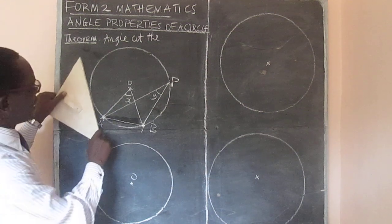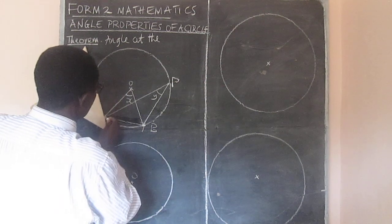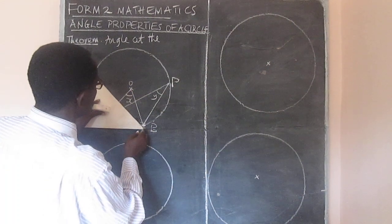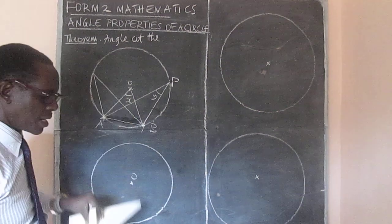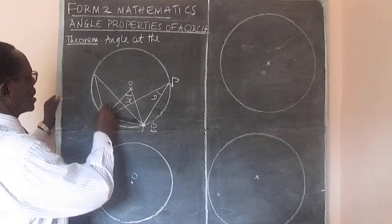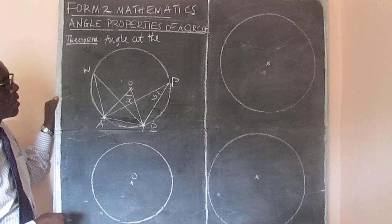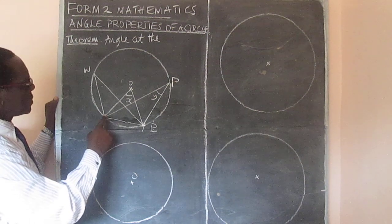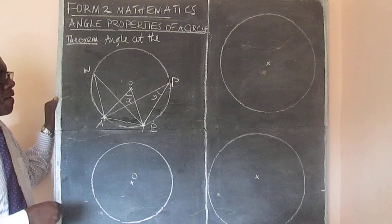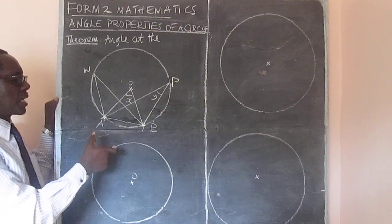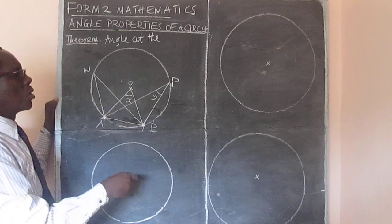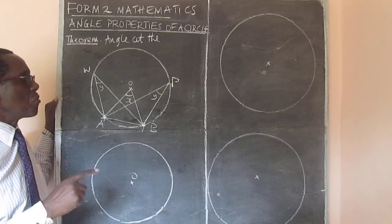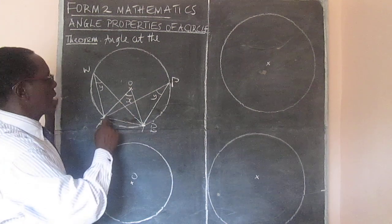We can make the same chord subtend another angle on the circumference, so that whatever we find, we can confirm. We can call this one AWB. So we have angle AOB, angle APB, and angle AWB. Last time we found that angles subtended by the same chord on the same part of the circumference are equal. So we already know that this angle is Y from our past lesson. But today we want to find the connection — the relationship between AOB and APB.